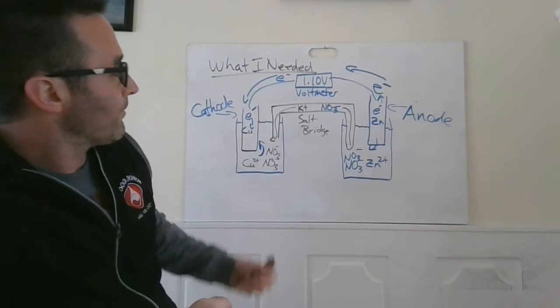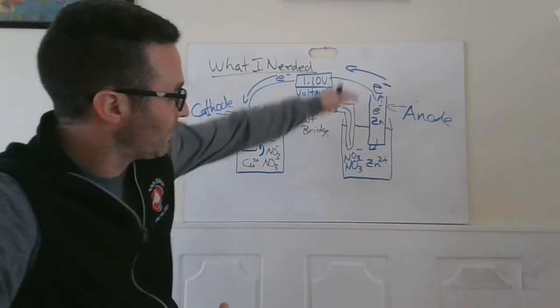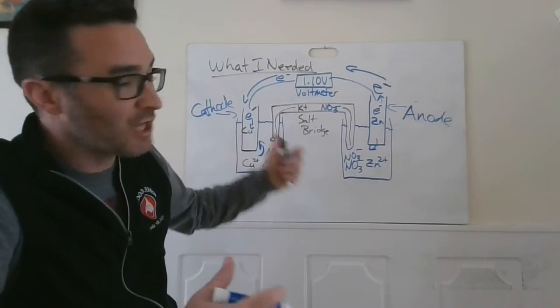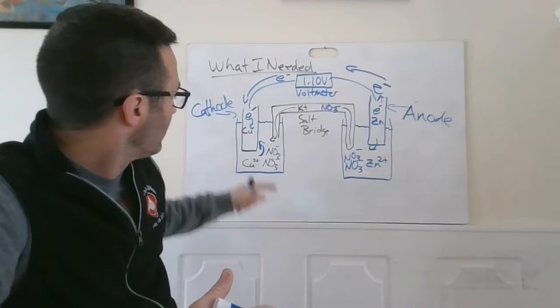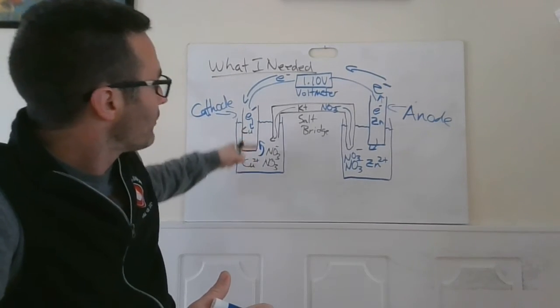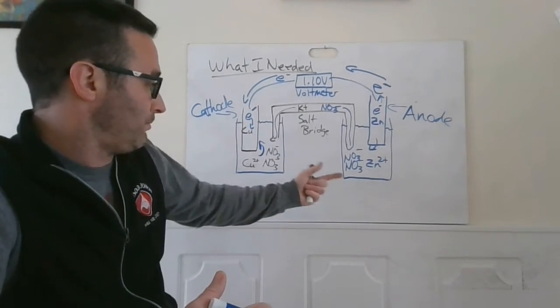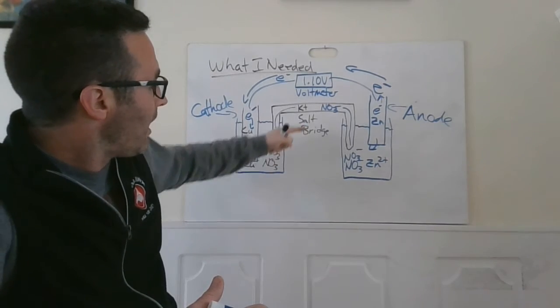So if we set this up so we get our 1.1 volts, zinc metal in a zinc ion solution with some negative ion to balance, something that wouldn't precipitate the zinc, copper metal in a copper containing solution with negative ions to balance that wouldn't precipitate the copper. So all nitrates are soluble. That's a good one. A salt bridge.